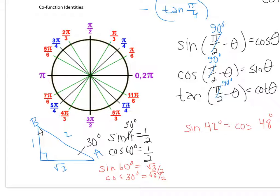You can also see it on a unit circle in radian mode. If you swing up pi over 6, this is the y value and this is the x value. If you swing down 90 degrees, notice how the x value and the y value flip — the x and y values swap. That's what's going on here, and you can prove the tangent identity by doing sine over cosine.